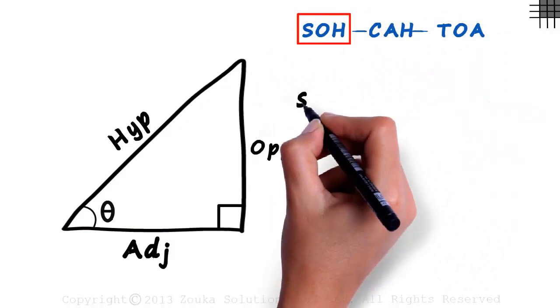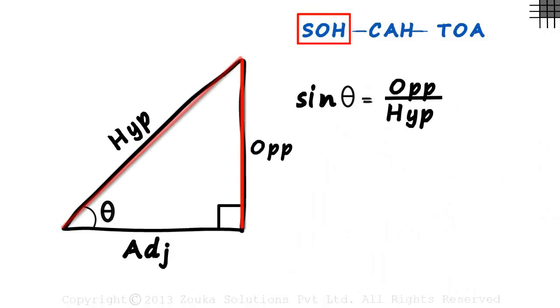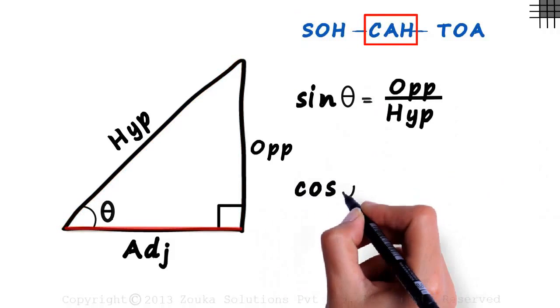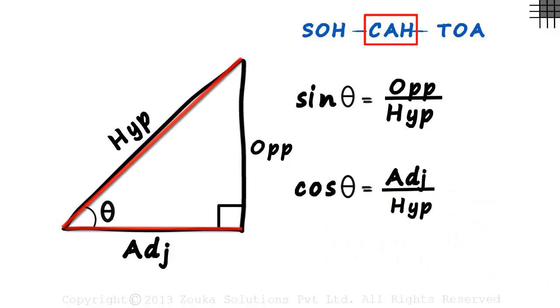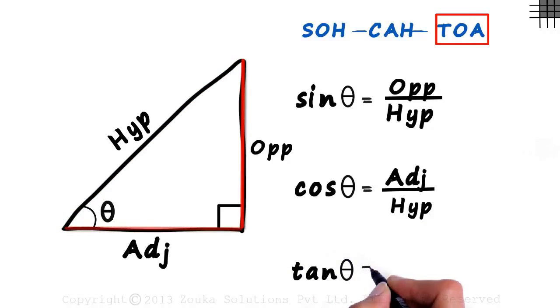SOH tells us that sine theta equals opposite by hypotenuse. CAH tells us that cos theta equals adjacent by hypotenuse. And TOA tells us that tan theta equals opposite by adjacent.